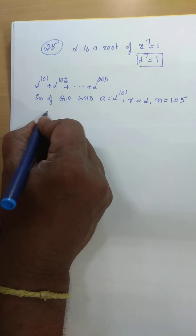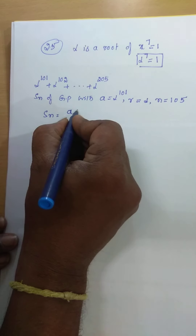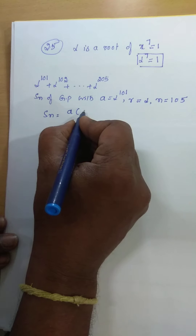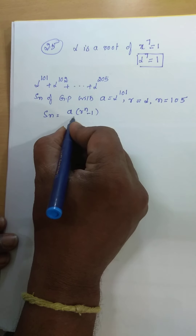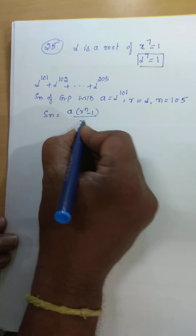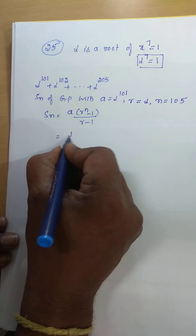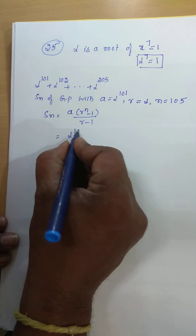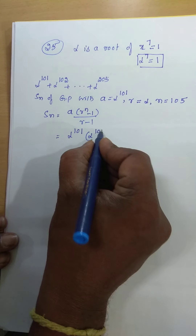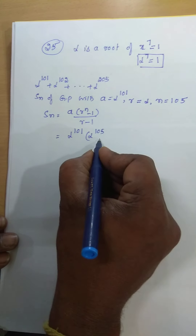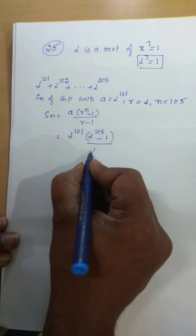Therefore, apply the Sn formula. What is Sn? Sn is equal to a into r power n minus 1, divided by r minus 1. Therefore, substituting: a is alpha power 101, r is alpha, n is 105, minus 1, divided by alpha minus 1.